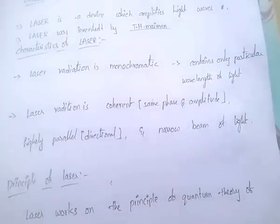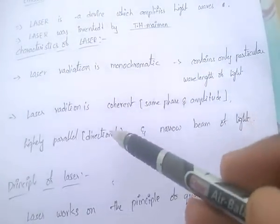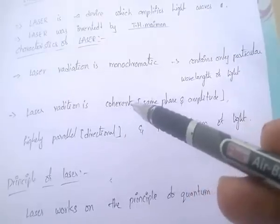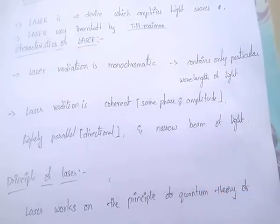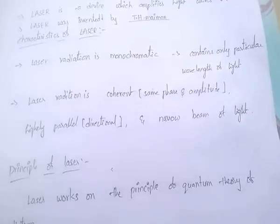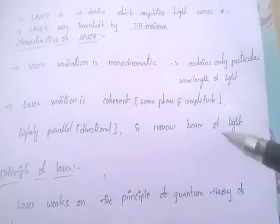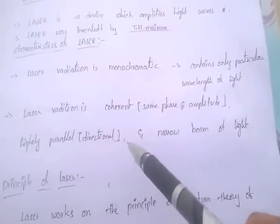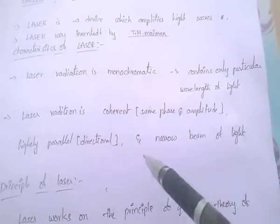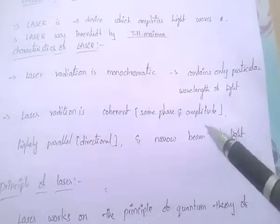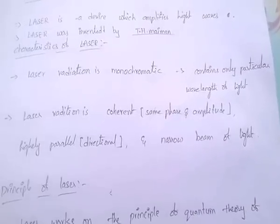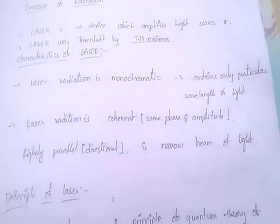Laser Radiation is Coherent. Coherent means the light has same phase and amplitude. And Laser Radiation is highly directional — a very narrow beam of light.